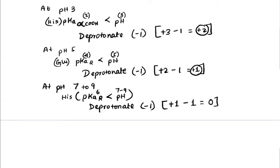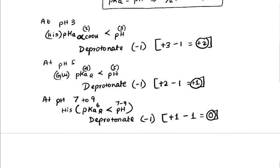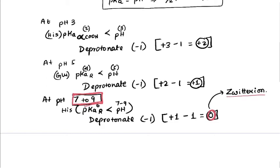So we varied the pH, removed charges step by step, and reached a charge of zero. The pH range at which the overall charge is zero — where the molecule acts as a zwitterion — is pH 7 to 9. Step 2 is complete.